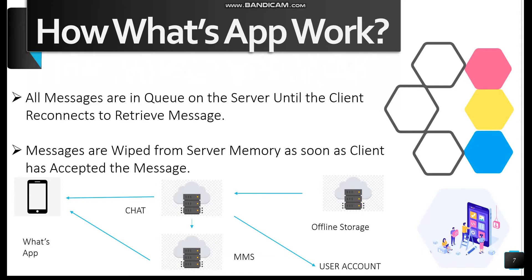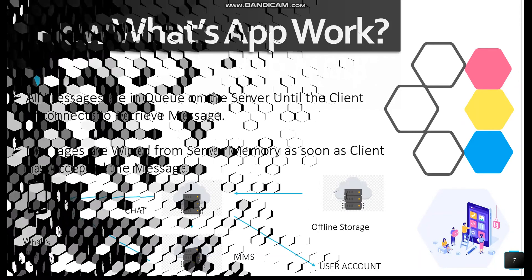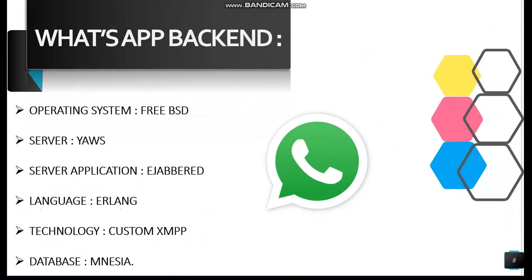The chat server also communicates with offline storage. Hardware specifications for WhatsApp include dual Westmere Hex-core processors, 24 logical units, 100 GB RAM plus SSD, and dual NIC. The backend uses FreeBSD as the operating system. Yaws is a web server, also known as Yet Another Web Server. ejabberd is the server application, and Erlang is the programming language. XMPP stands for Extensible Messaging and Presence Protocol. PHP is used as a server-side scripting language. Mnesia is the database, and RC4 is the encryption used to encrypt your data and chats.